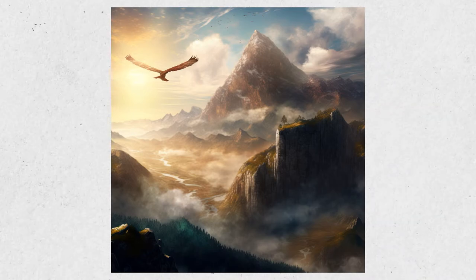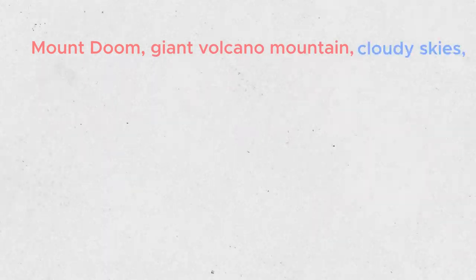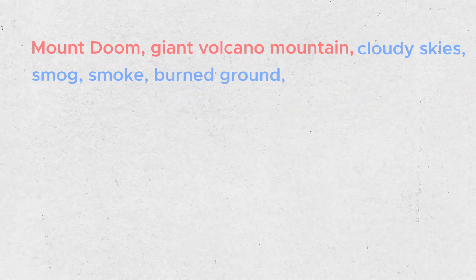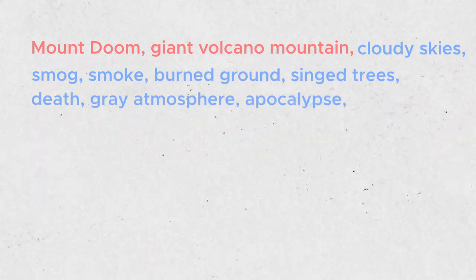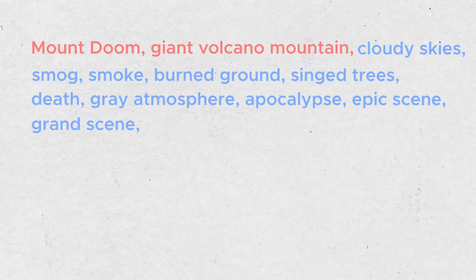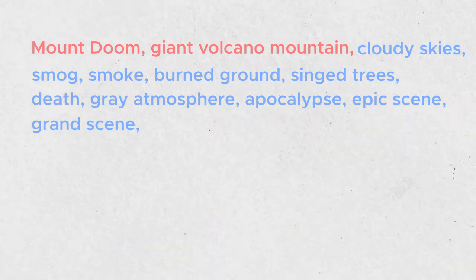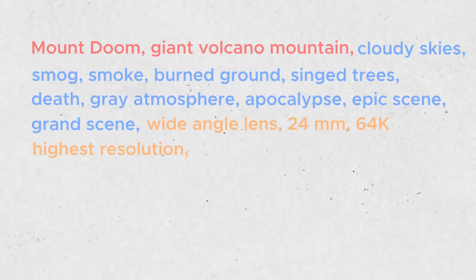But what if I want a different one? Let's get more specific with our vision — I'm gonna go straight for Mount Doom. I will add a lot more details to this image: Giant Volcano Mountain, Cloudy Skies, Smog, Smoke, Burned Ground, Cinch Trees, Death, Grey Atmosphere, Apocalypse, Epic Scene, Grand Scene. And include a cinematic style with camera lenses and resolution details: Wide Angle Lens, 24mm, 64K, Highest Resolution, V4.